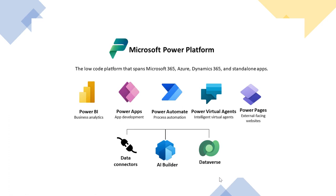All the capabilities of Dataverse — such as business rules, JavaScript validations, plugins, business process flows, charts, and graphs — can be utilized in model-driven applications. Whenever you develop something inside Dataverse and want to validate that it is working correctly, you need a front end. That front end is provided through the model-driven application, allowing you to directly visualize what you have built in Dataverse.